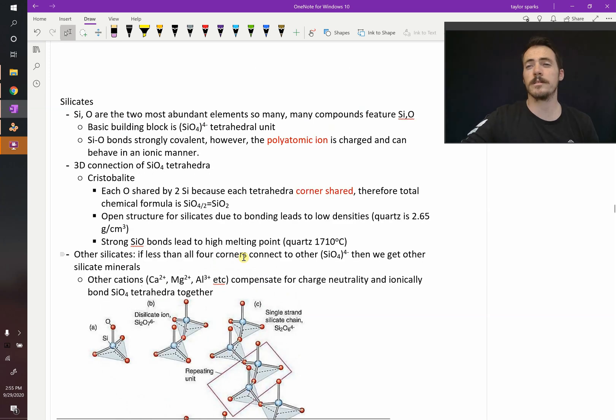Another really important class of ceramic materials are silicates. Silica and oxygen are probably the two most abundant elements in the earth's crust, and so unsurprisingly, silicates, or silicon bonded to oxygen, make up one of the most common compounds that are all over the place.